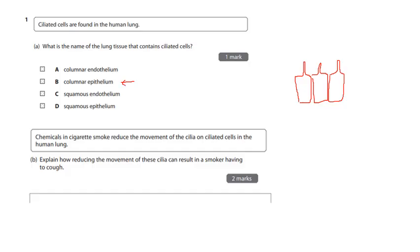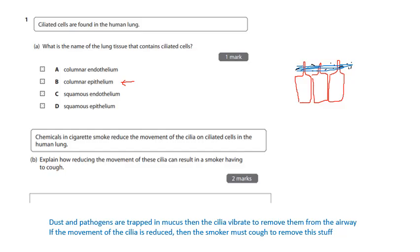Chemicals in cigarette smoke reduce the movement of cilia. Explain how reducing the movement of the cilia can result in a smoker having to cough. Well, so basically, the cilia vibrate. There's mucus and bits of dust and rubbish and garbage gets trapped in the mucus, and then the cilia vibrate, and they carry it out of the airway. Now, if the cilia aren't working properly because they've been damaged, then how is the smoker going to get rid of this rubbish? And all they can do is cough.